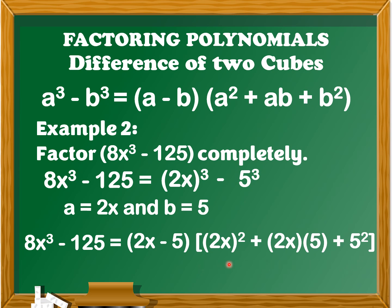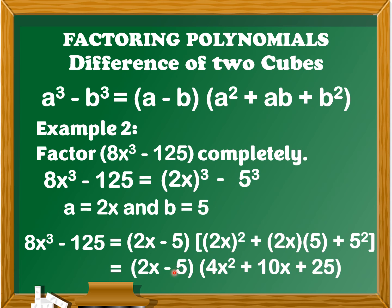Next, we're going to simplify this factor. So we have the quantity of (2x minus 5) times the quantity of (4x squared plus 10x plus 25), since the square of 2x is 4x squared, 2x times 5 is 10x, and the square of 5 is 25. Therefore, 8x cubed minus 125 is equal to (2x minus 5)(4x squared plus 10x plus 25).